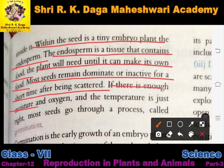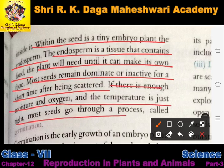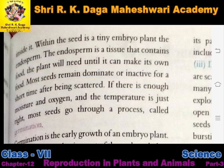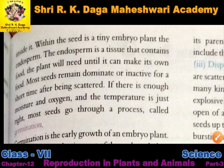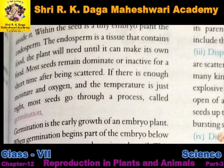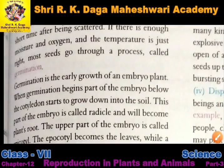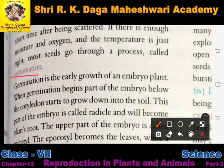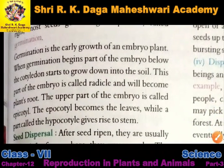If there is enough moisture and oxygen, and the temperature is just right, most seeds go through the process called germination. Kuch samay tak ye seeds inactive rehte hain, aur kuch samay ke baad jab inhe proper temperature aur appropriate oxygen milti hai, to in seeds ka germination hota hai — ye seeds germinate karna start kar dete hain.